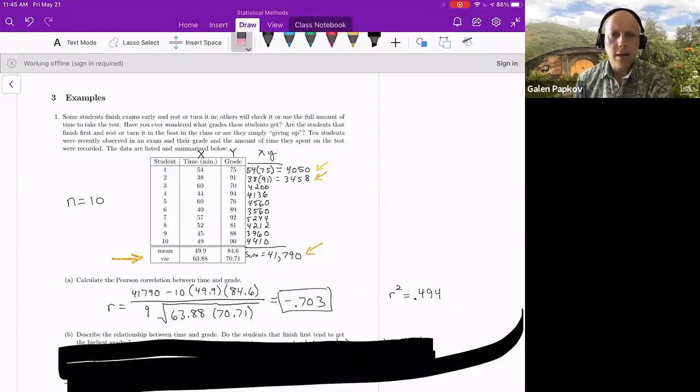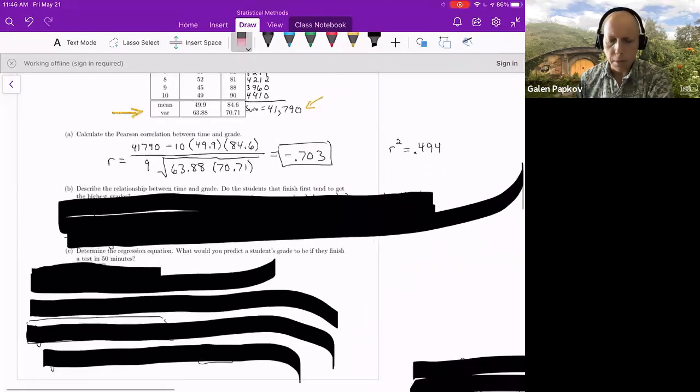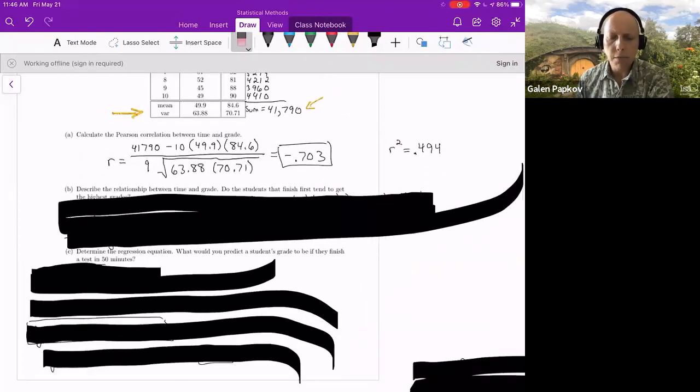Part a, it's just asking us to calculate r, which we just did. Now we move on to part b. And b says, describe the relationship between time and grade. Describe the relationship. Well, r is negative. So we know that there's a negative or decreasing relationship. And r squared is between 0.3 and 0.7. It's pretty close to the middle, 0.5. So that tells us it's moderate. So we have a moderate decreasing relationship between time and grade.